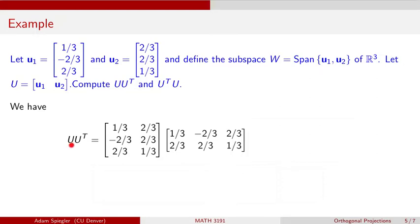Matrix U has its first column as u1 = [1/3, -2/3, 2/3] and its second column as u2 = [2/3, 2/3, 1/3]. I'm going to take this matrix U and multiply it by its transpose. Since U has three rows and two columns, the transpose has two rows and three columns. The first column of U becomes the first row of Uᵀ: [1/3, -2/3, 2/3], and row 2 is [2/3, 2/3, 1/3].